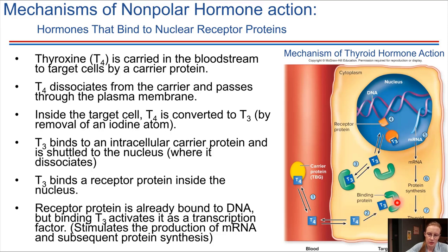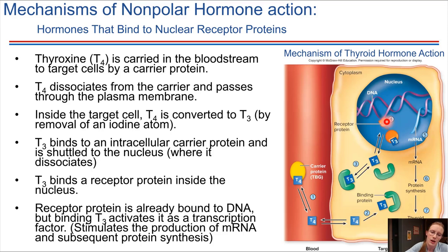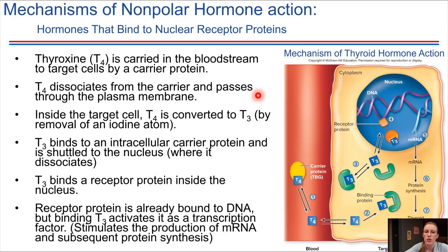T3 can bind to a receptor. A binding protein carries T3 to the nucleus, and then T3 goes inside of the nucleus and binds its receptor there. That's the key difference from the previous example — here the receptor is in the nucleus, and binding of T3 causes the receptor protein to become an active transcription factor. The receptor protein starts off already bound to the DNA, but it's not active as a transcription factor until T3 binds. So those are two mechanisms — examples of nonpolar hormones and how they work.